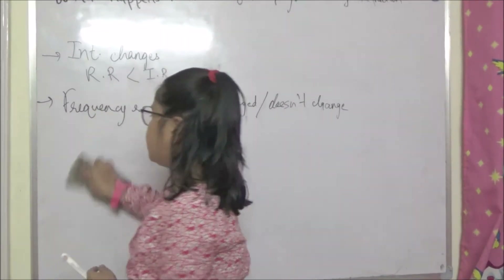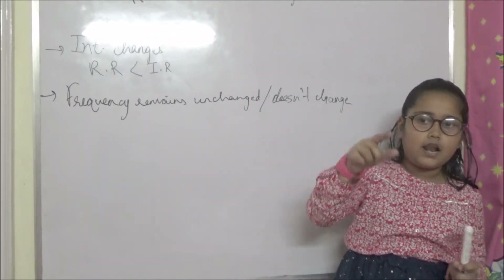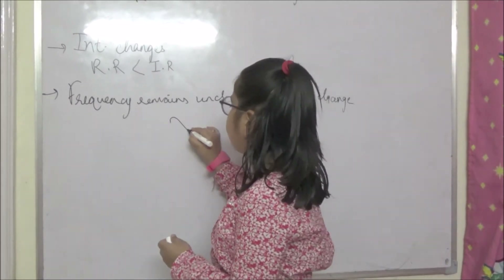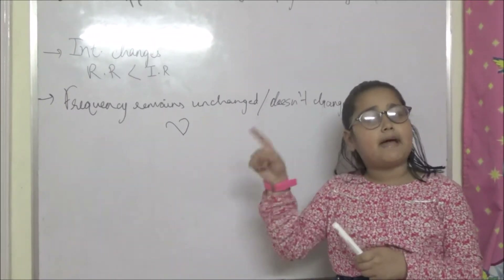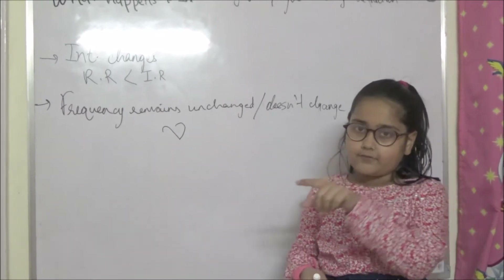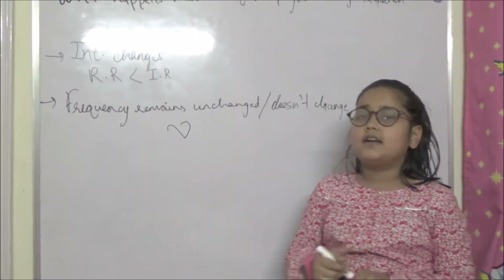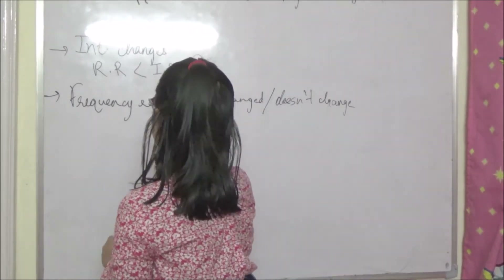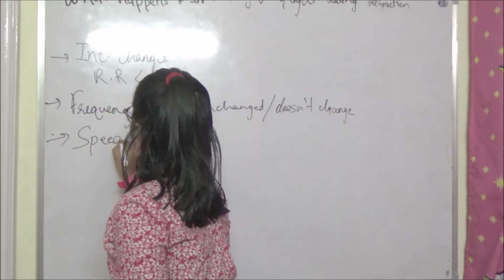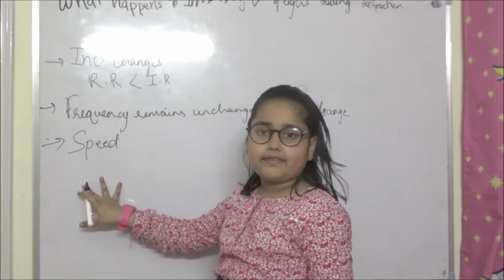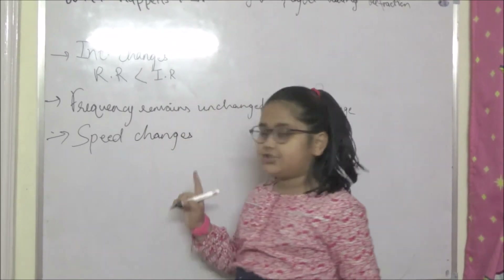Frequency is represented by the symbol small f. The formula for frequency is: frequency equals one upon time period. Now let's talk about the third property, which is speed. Speed changes during refraction.